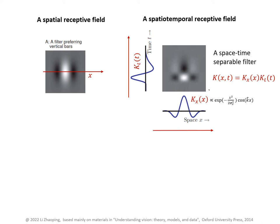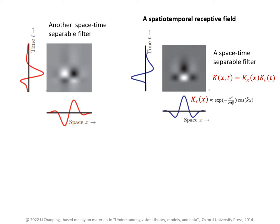This neuron's initial response prefers a white bar and its later response prefers a black bar, so this neuron should be excited by a flashing vertical bar. Here is another space-time separable receptive field whose spatial filter is a 90-degree phase-shifted version of the Gabor filter, so it prefers an edge rather than a bar. Its temporal filter is also a 90-degree phase-shifted version, and such a filter can be excited by a flashing edge.